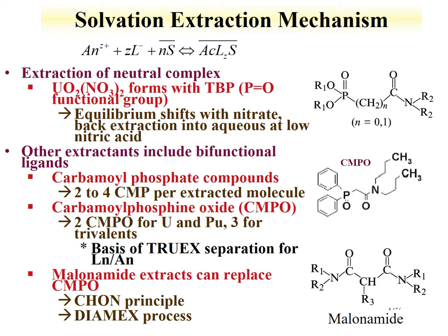There are a number of reaction mechanisms involved in solvent extraction processes. The first is the solvation extraction mechanism: a charged actinide with a charged ligand and some solvent forms a neutral actinide species coordinated with the solvent, which is extracted into the organic phase. Examples include extraction with neutral complexes such as tributyl phosphate, which forms a neutral species — the uranyl nitrate coordinates tributyl phosphate and gets extracted into the organic phase. One can shift the equilibrium back to a charged species to back-extract uranium from the organic phase into the aqueous phase.